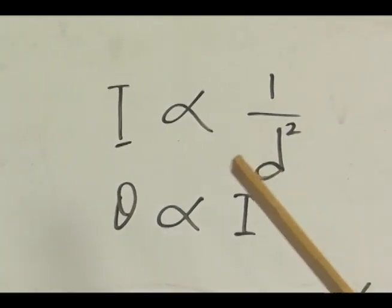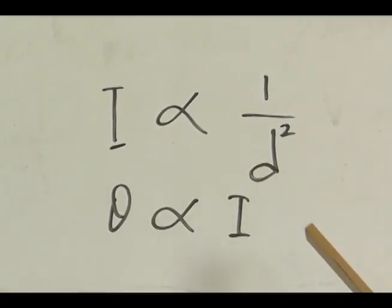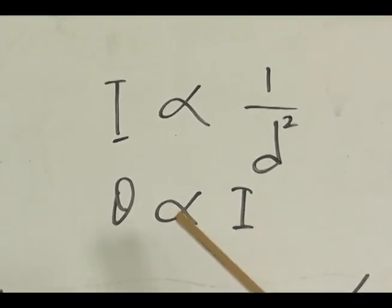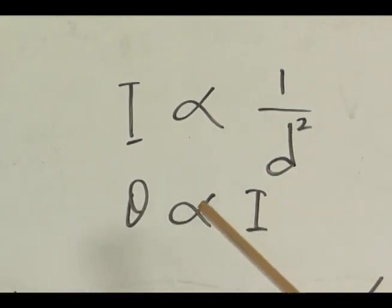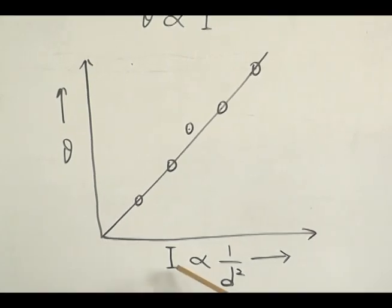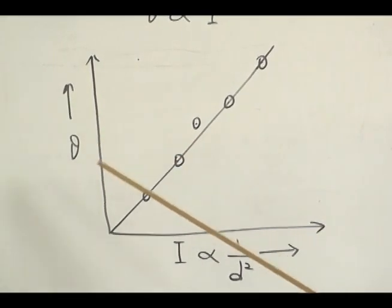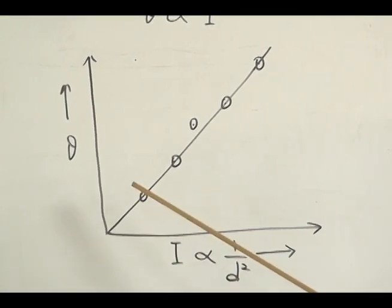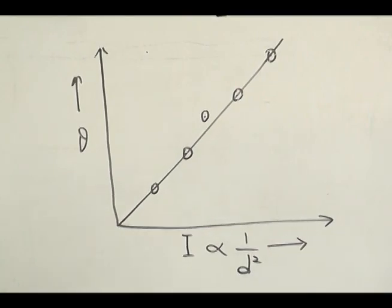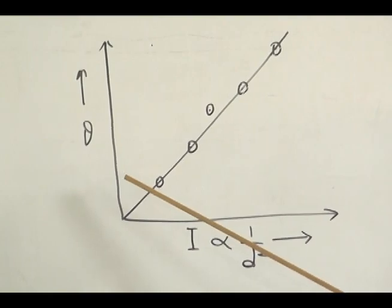As we know, light intensity is inversely proportional to the square of the distance between the electric lamp and photocell, so I is directly proportional to 1 over d². We also know that electric current is directly proportional to the light intensity. So we plot the graph between current and light intensity — since they are directly proportional, we get a straight line graph. This shows that when light intensity increases, the current also increases and vice versa.